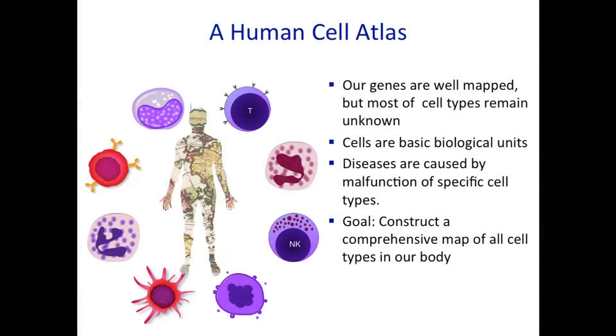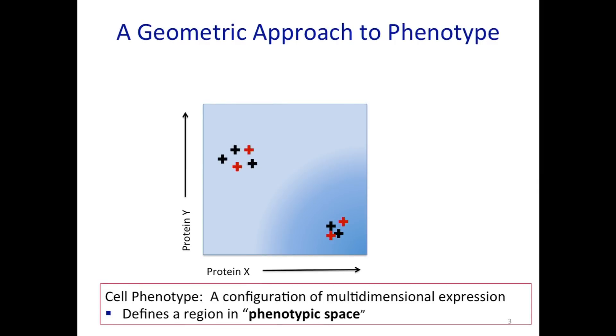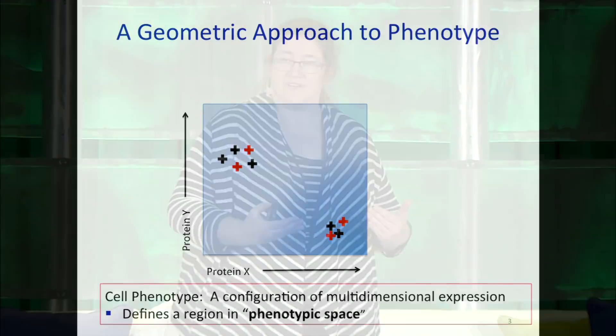I think we really need an atlas. Just like we have a mapping of all our genes, we need a mapping of all our different cell types. Previously, people thought we have a couple hundred cell types. But if you talk to immunologists, they'll say we actually have a couple hundred immune cells. And if you talk to a T-cell biologist, they'll say we have a couple hundred types of T-cells.